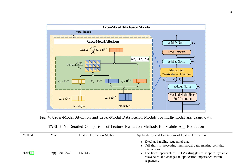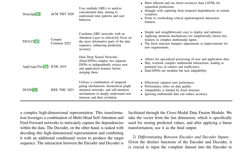A comparison of feature extraction methods for mobile app prediction is presented in Table IV. NAP uses LSTMs to handle sequential data but falls short in processing multimodal data. DeepApp uses multiple groups to analyze concatenated data but struggles with capturing deep temporal dependencies. PaULCI combines GRU networks with an attention layer but applies attention mechanisms too simplistically. AppUsage2Vec employs dual deep neural networks to extract user and application features but may overlook complex multimodal interactions. DUGN utilizes a combination of temporal gating mechanisms, hierarchical graph attention networks, and self-attention mechanisms to understand user interests but has limited adaptability.